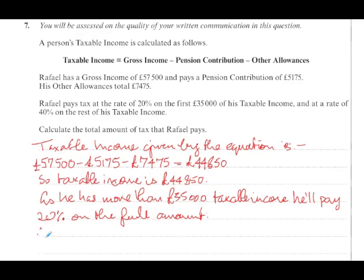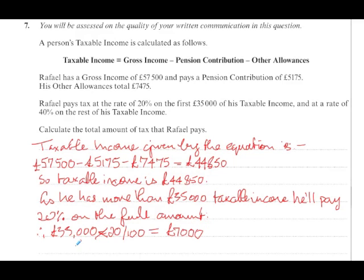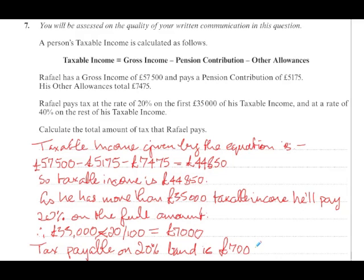As he has more than £35,000 taxable income, he'll pay 20% on the full amount. Therefore 20% of £35,000 — that's £35,000 times 20 over 100 — equals £7,000. So tax payable on the 20% band is £7,000.